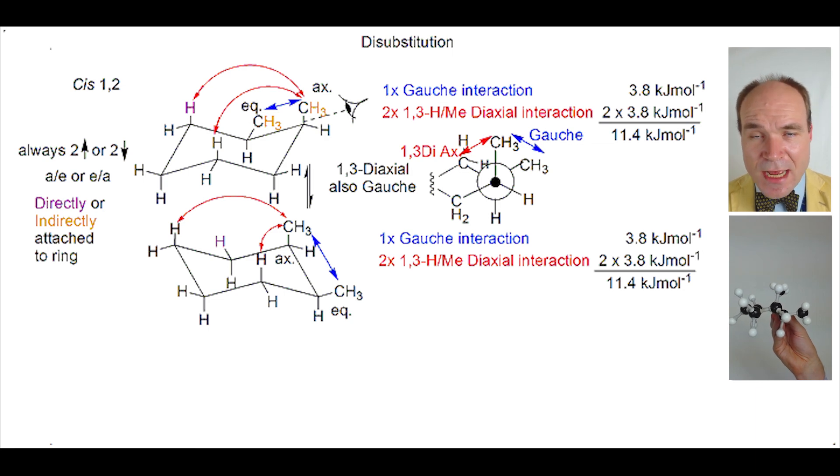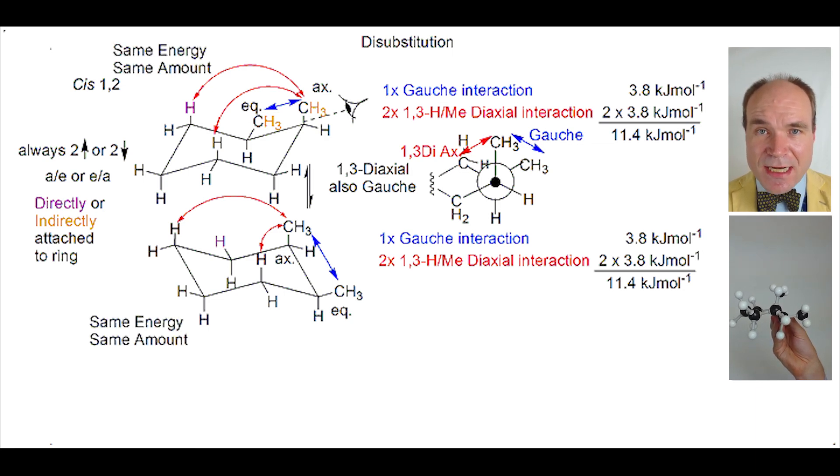Either chair conformation has the same steric strain energy, so both are equally likely to occur. They have the same population present.